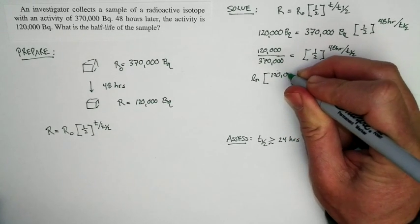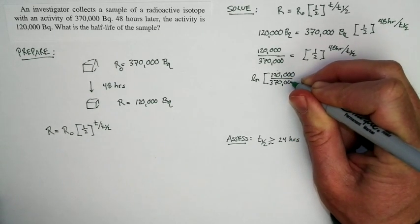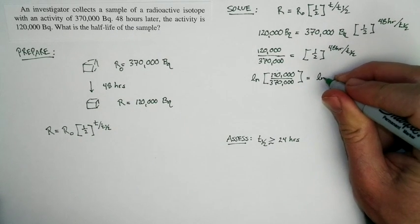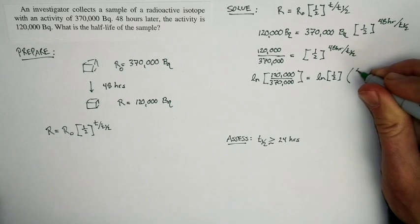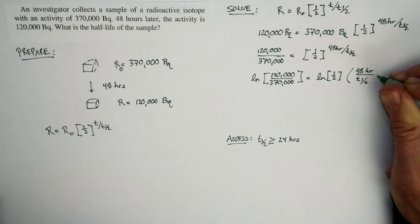Natural logarithm of 120,000 over 370,000 is equal to the natural logarithm of one-half times 48 hours over t₁/₂.